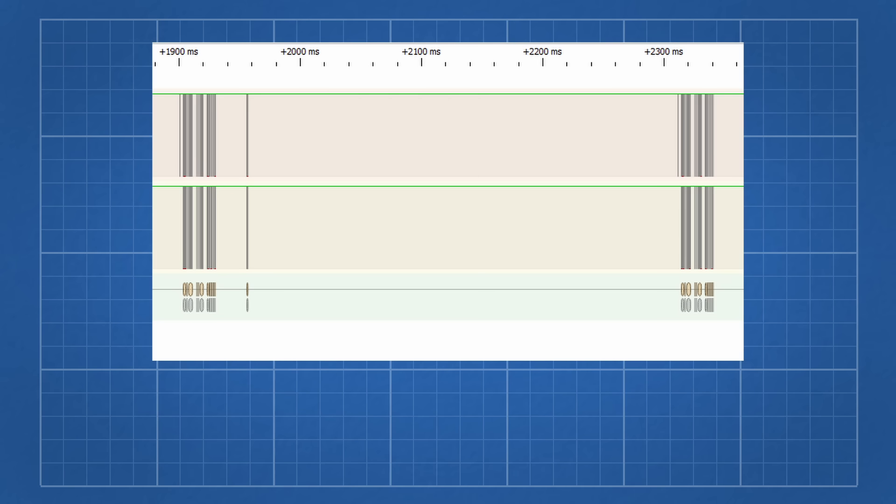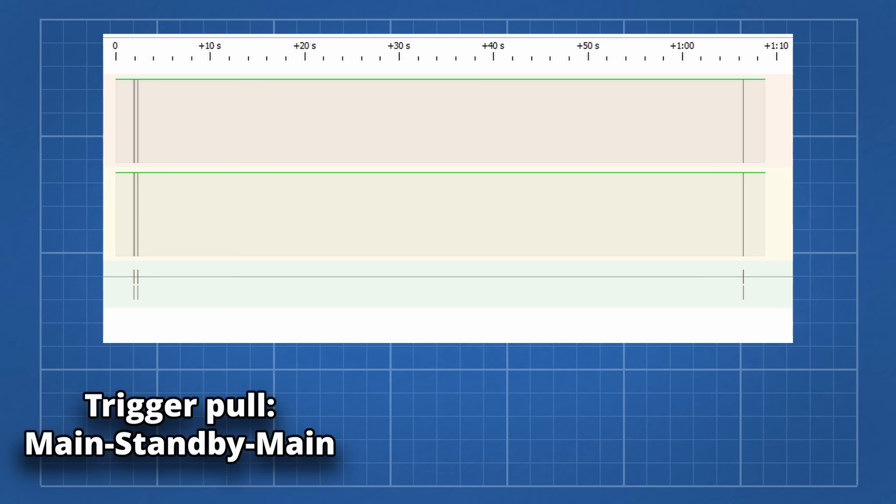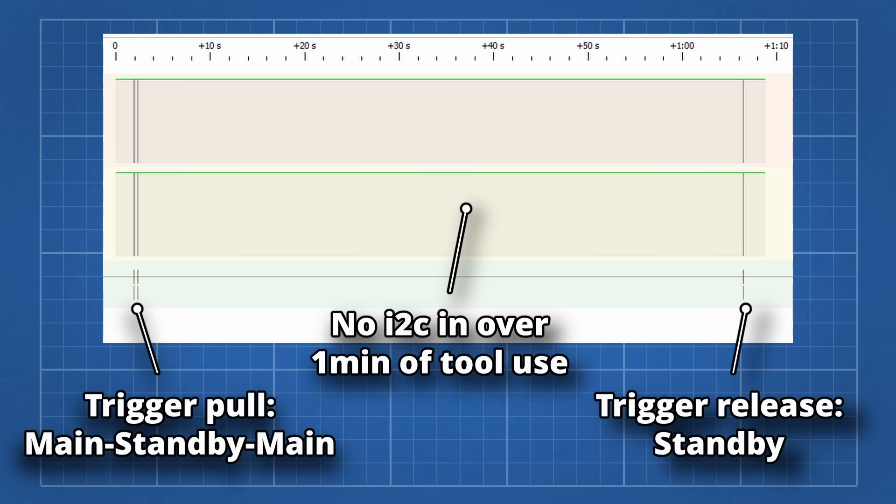When you pull the trigger on a tool, it starts with what I call the main sequence, then it puts the analog frontend into standby mode, then does the main sequence again. When you release the trigger, it just puts the analog frontend in standby mode. There are no comms when the tool is running, just on trigger pull and release.